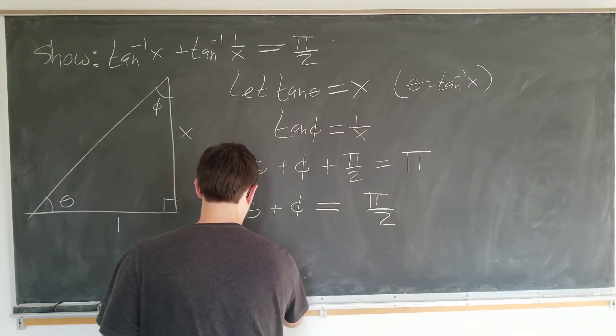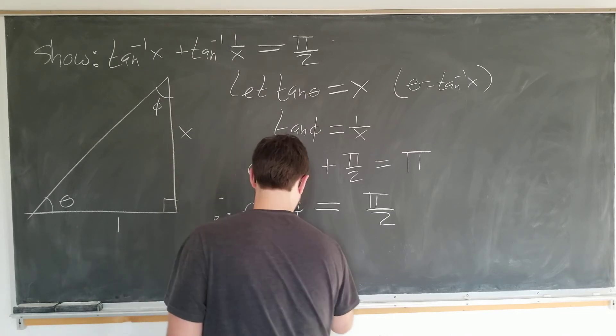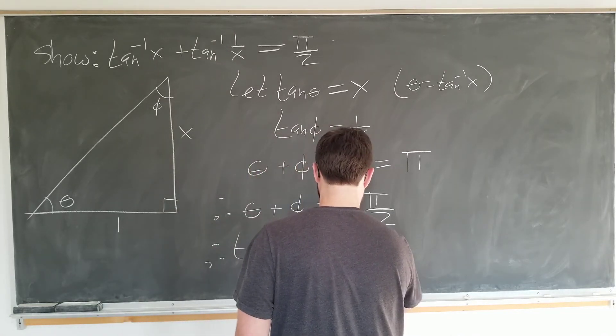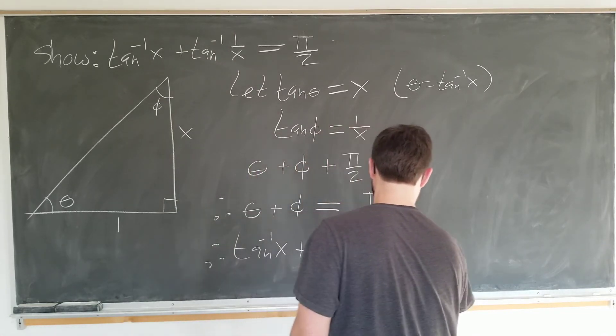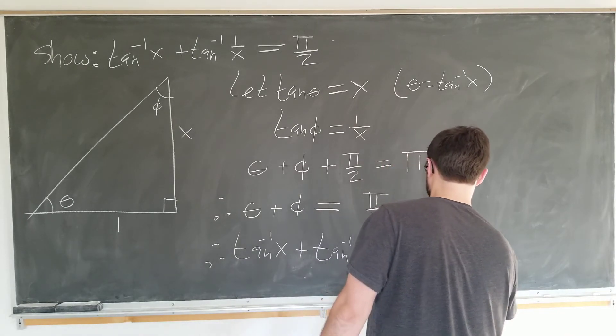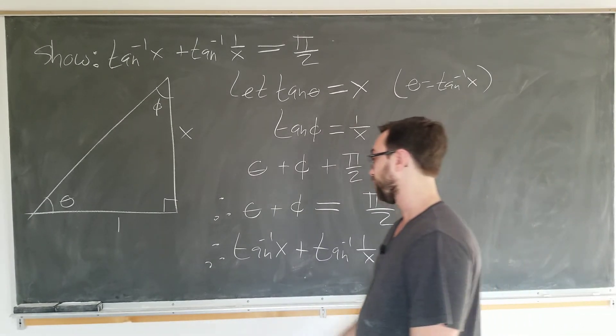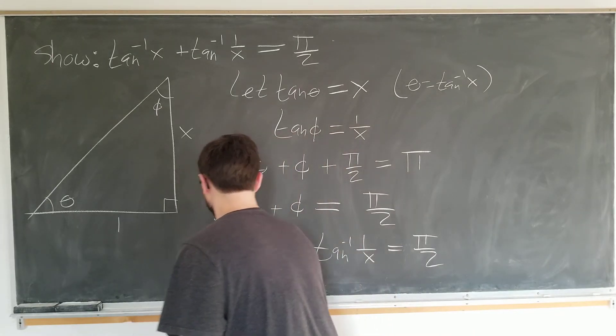So inverse tangent of x plus inverse tangent of 1 over x is equal to pi over 2. Not really that bad. It seems like it would be more difficult, but it is quite simple.